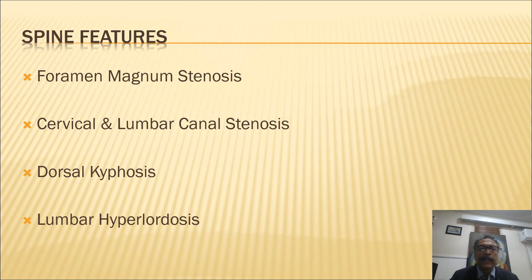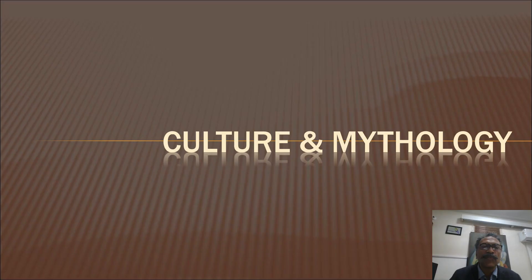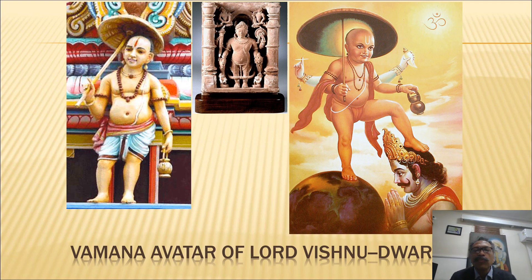In the spine they have foramen magnum stenosis, cervical and lumbar canal stenosis, which typically manifest clinically in the third decade. They also have dorsal kyphosis and lumbar hyperlordosis. The foramen magnum stenosis and cervical canal stenosis make them susceptible to paraparesis or weakness of the upper and lower limbs, and one should beware of taking on such patients for lengthening.